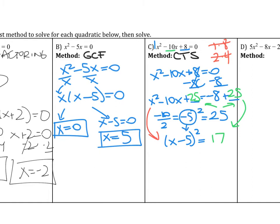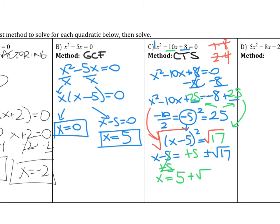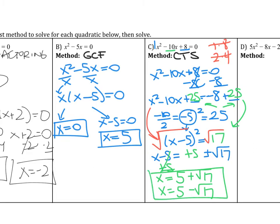Now solve by square roots: take the square root of both sides to get x - 5 = ±√17. Since 17 is prime, it doesn't simplify further. Add 5 to both sides: x = 5 + √17 and x = 5 - √17.